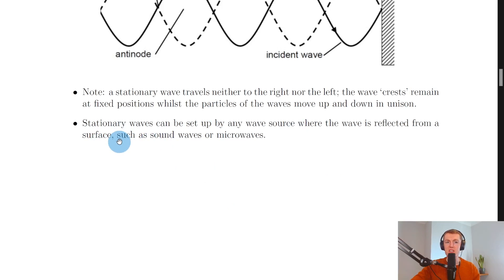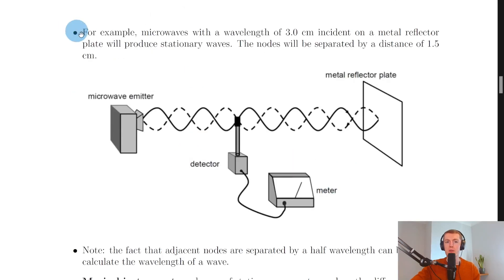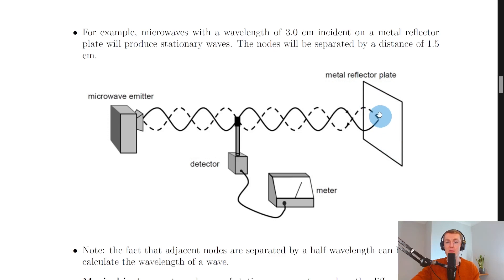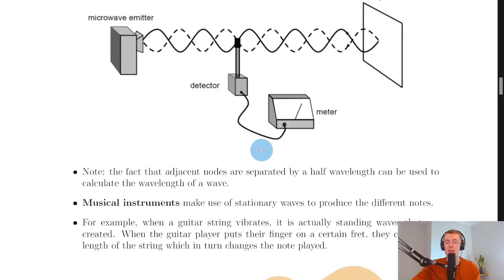Stationary waves can be set up by any wave source where the wave is reflected from a surface, such as sound waves or microwaves. For example, microwaves with a wavelength of 3 centimeters incident on a metal reflector plate will produce stationary waves, with nodes separated by 1.5 centimeters. A detector connected to a meter can detect regions of weak microwave signals — corresponding to nodes — and strong signals — corresponding to antinodes.